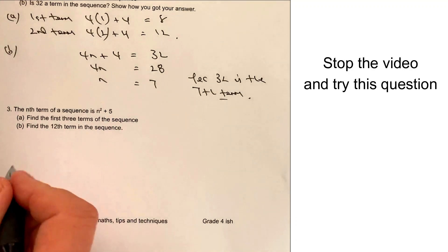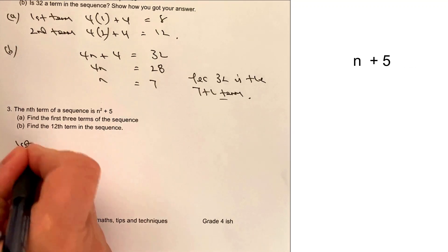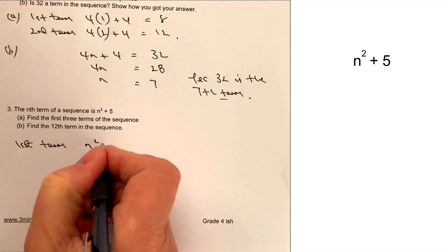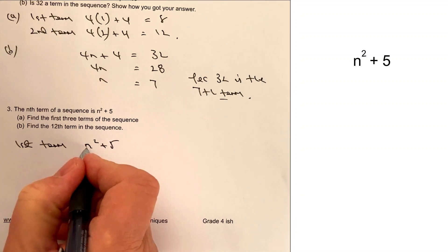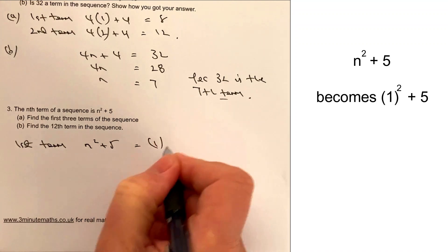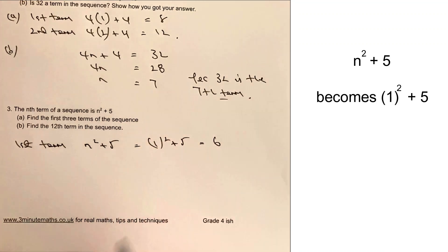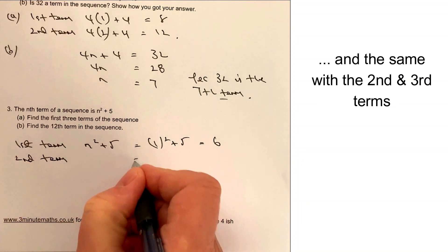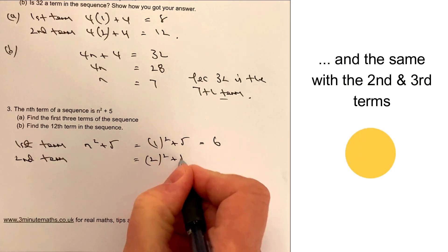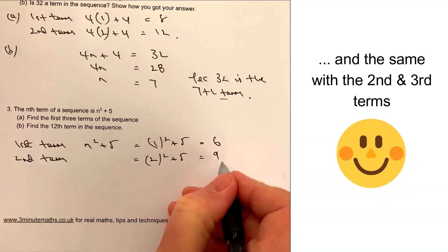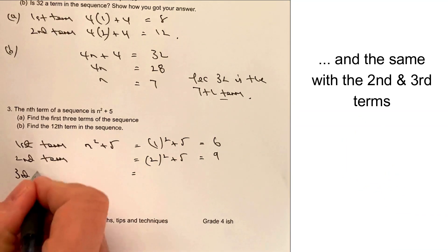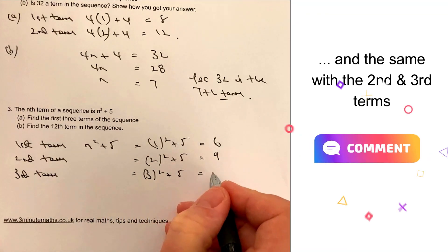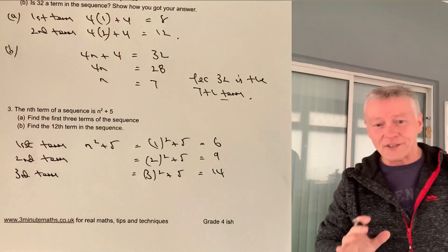We want to know the first term. We just put it straight in. So the first term in this particular case is going to be where we've got n squared plus 5. So rather than writing n, I'm actually going to write that as 1 squared plus 5. So the first term is going to be 6. The second term, well again, I'm going to use exactly the same idea. That's going to equal 2 squared plus 5, and that's going to be 9. And then the final one, which is the third term, is going to be 3 squared plus 5, and that's going to be 14.